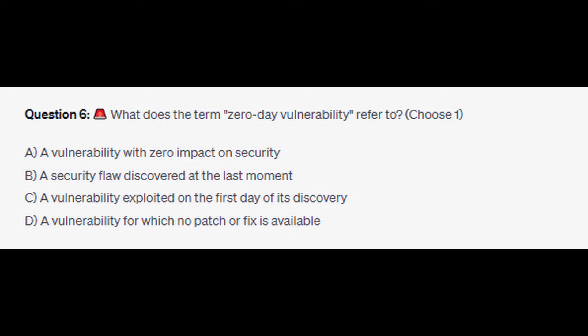Question number six: what does the term zero-day vulnerability refer to? Choose one. Is it A: a vulnerability with zero impact on security, is it B: a security flaw discovered at the last moment, is it C: a vulnerability exploited on the first day of its discovery, or is it D: a vulnerability for which no patch or fix is available? You now have five seconds.